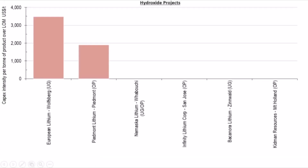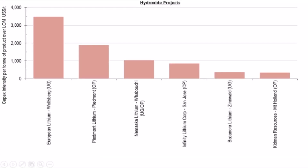Our first chart looks at the capex intensity of hydroxide projects. The capex intensities for these projects varies by an order of magnitude, from 3,500 US dollars per tonne to 350 US dollars a tonne, with an average of 1,300 US dollars a tonne.